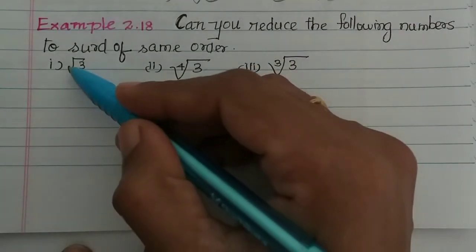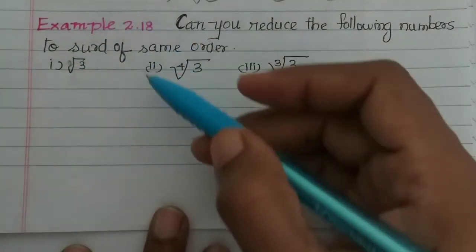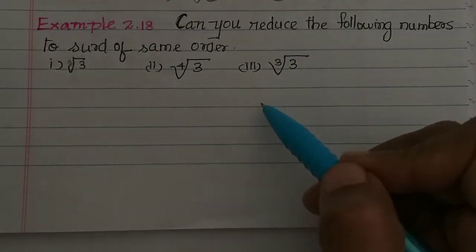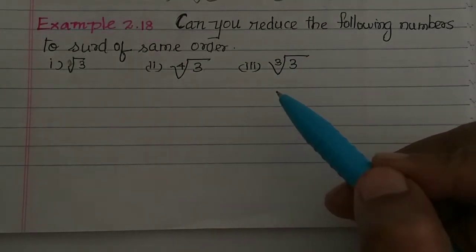If the surd order is 2, this is 4, this is 3. So all different orders. We will see the same order.